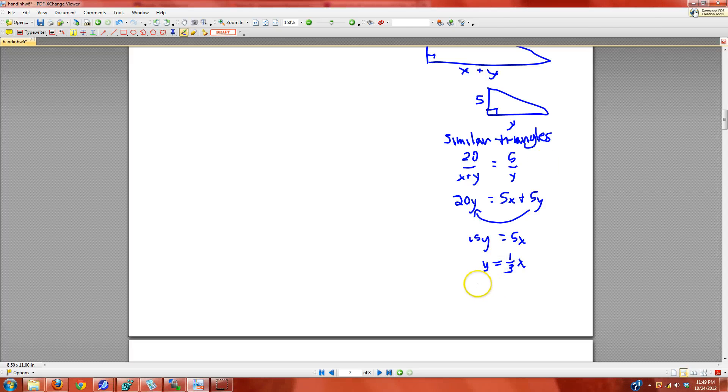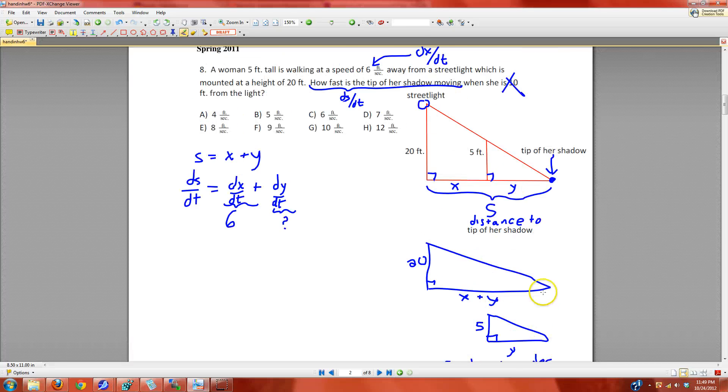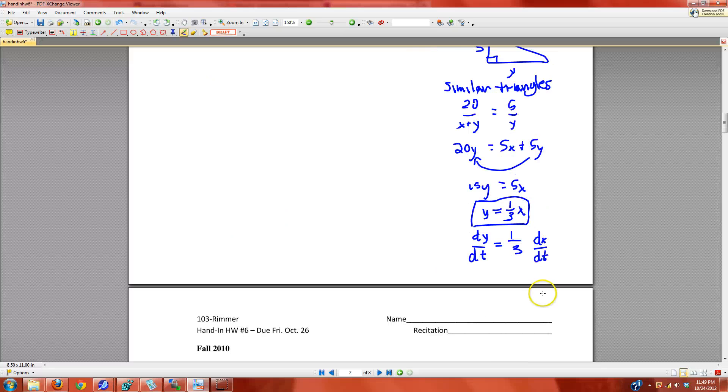If Y is 1 third of X, then what you can do is take the derivative and say that dY/dt is 1 third of dX/dt. And we know dX/dt is 6, so dY/dt is 2.